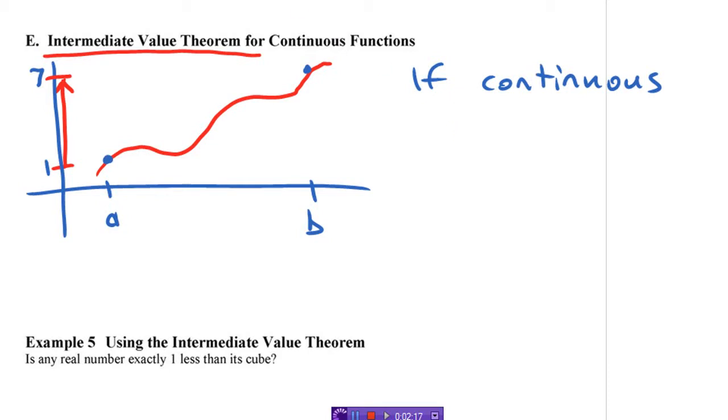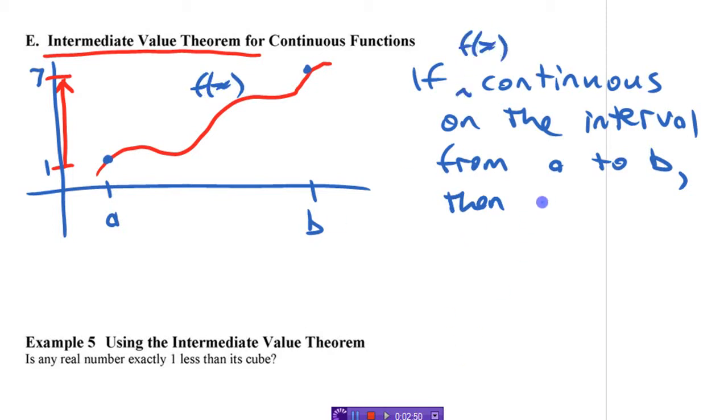So I'm going to say here, if this thing is continuous on the interval from a to b, then if we call this f of x, we need a name for it. If f of x is continuous on that interval, then f of x takes on, takes on every value.